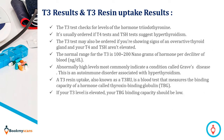T3 results and T3 resin uptake results: The T3 test checks for levels of the hormone triiodothyronine. It is usually ordered if the T4 and TSH tests suggest hypothyroidism. The T3 test may also be ordered if you are showing signs of an overactive thyroid gland and your T4 and TSH aren't elevated. The normal range for T3 is 100 to 200 nanograms of hormone per deciliter of blood. Abnormally high levels most commonly indicate a condition called Graves' disease, an autoimmune disorder associated with hyperthyroidism.